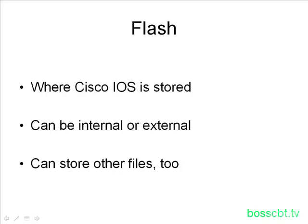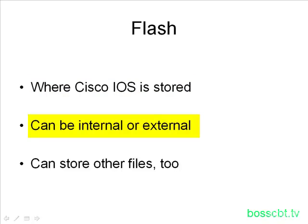The next type of memory is flash memory. It's in your flash where you'll find the Cisco IOS — the full image that eventually gets loaded is located in flash. Flash memory can be internal or external; some models allow you to supplement your flash memory with an external flash card. Not only can you put a Cisco IOS image here, you can also put other files here too. You can have multiple Cisco IOS images, and you can use it to store a backup of your startup configuration file — it's a handy place to store files.